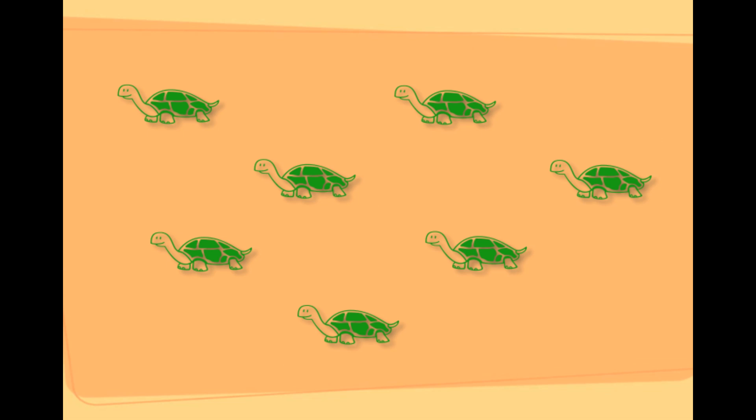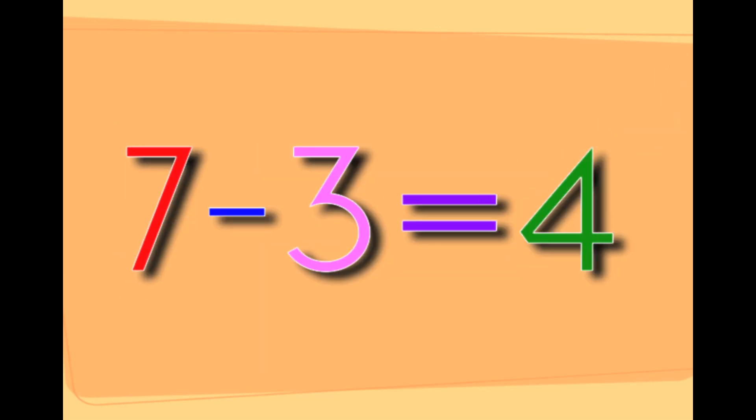Those are seven turtles. Taking three turtles away from the seven turtles will leave you with four turtles. Seven minus three equals four.